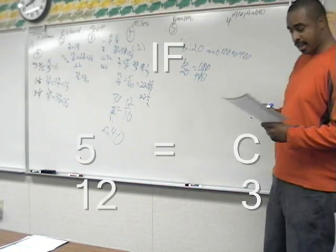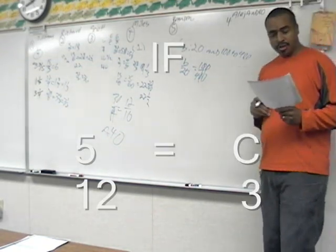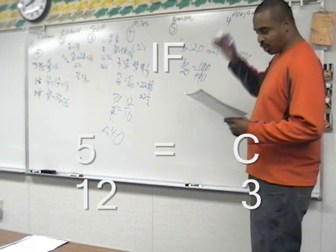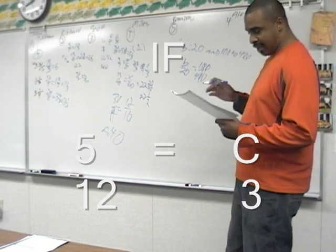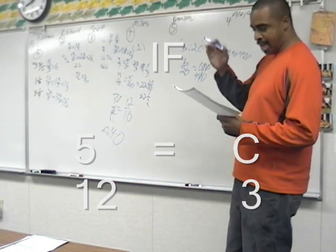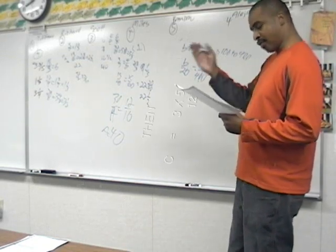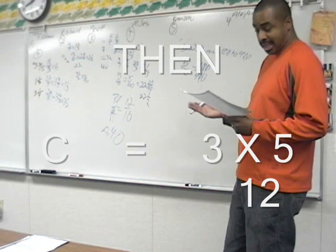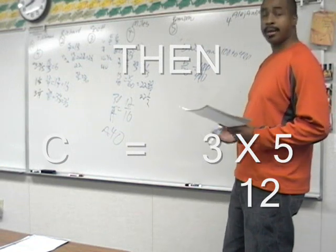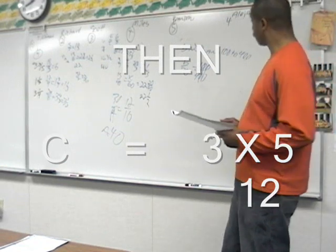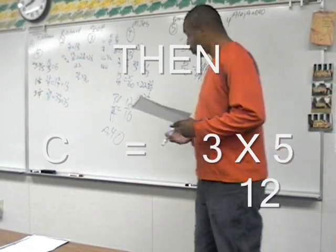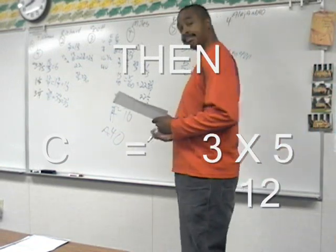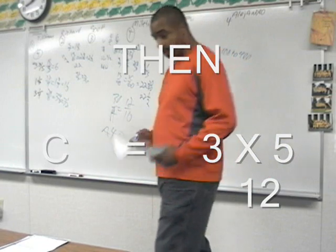Number five, Brandon: if 5 to 12 equals c to 3, then 3 times 5 — or 5 times 3, either way — divided by 12 is c. That's right. Good job.